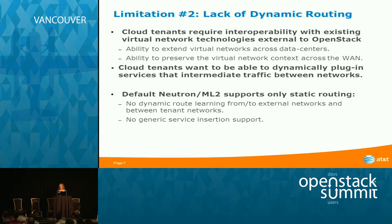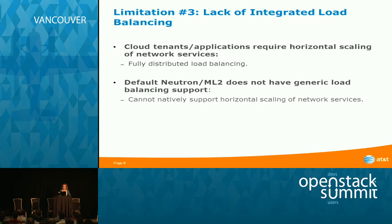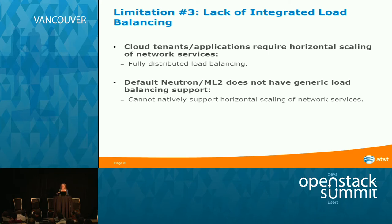The second aspect of lacking dynamic routing is that cloud tenants want to be able to dynamically plug in services between networks. You need dynamic routing to do that correctly, in a scalable and automated manner. Default Neutron doesn't have dynamic routing right now, and there is no generic service insertion support. The third limitation is lack of integrated load balancing — network services deployed in VMs require horizontal scaling, and the traffic must be load balanced to potentially hundreds of instances.